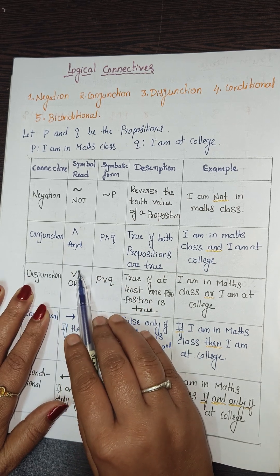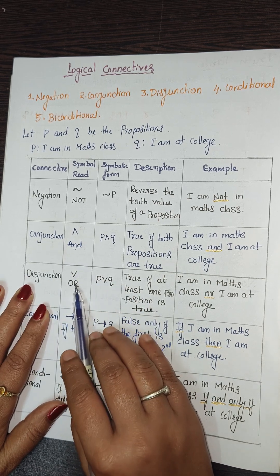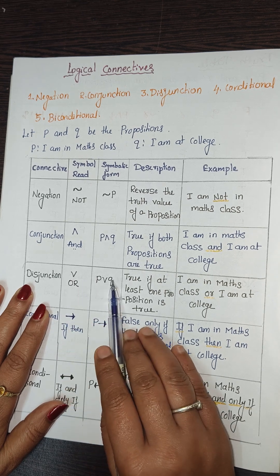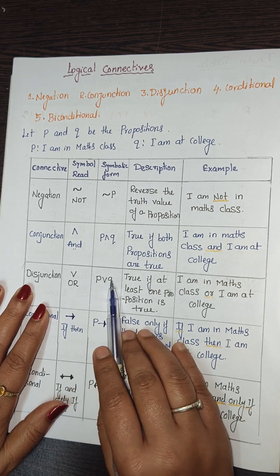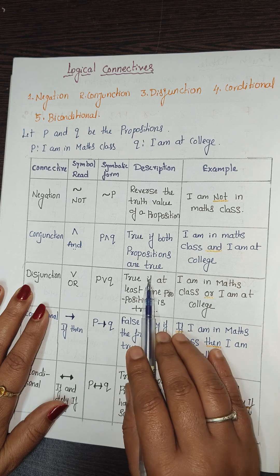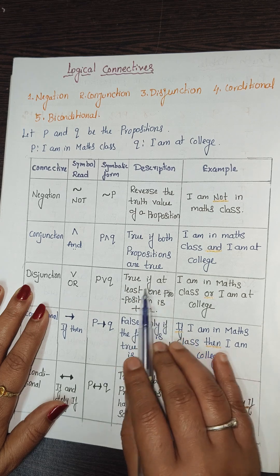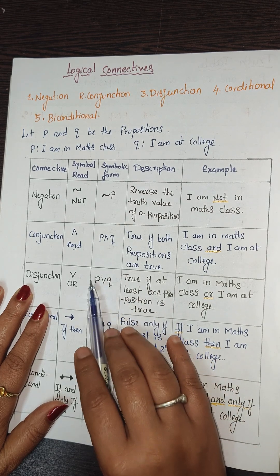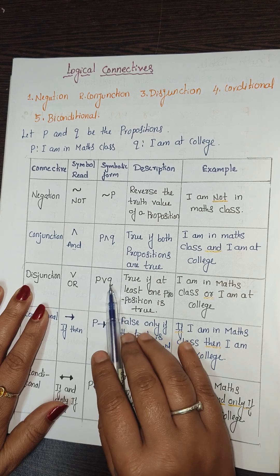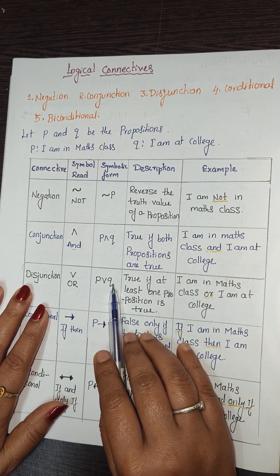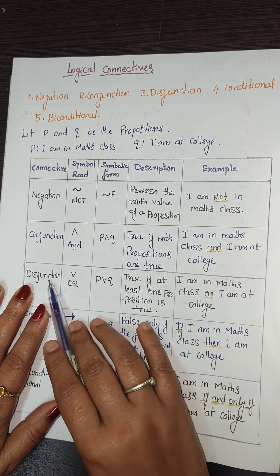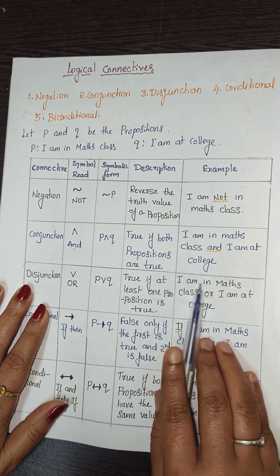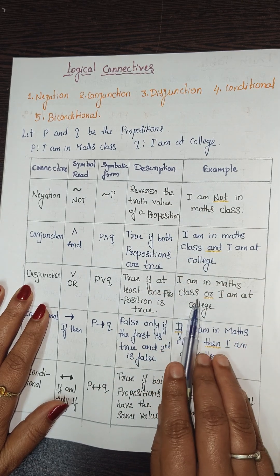Disjunction is denoted by the symbol ∨ (V) and is read as 'p or q.' It is true if at least one proposition is true — meaning if either p or q is true, the disjunction is true.